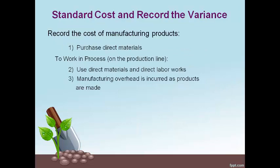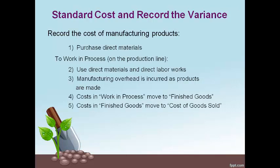Let's do a quick review of the flow of manufacturing costs. Direct materials are purchased, put in the direct materials warehouse, and moved to the production line as products are made. Direct labor works and manufacturing overhead costs are incurred. Then all three product costs are recorded to work in process. The cost of completed products is moved to finished goods, and the cost of finished goods is moved to cost of goods sold when products are sold.